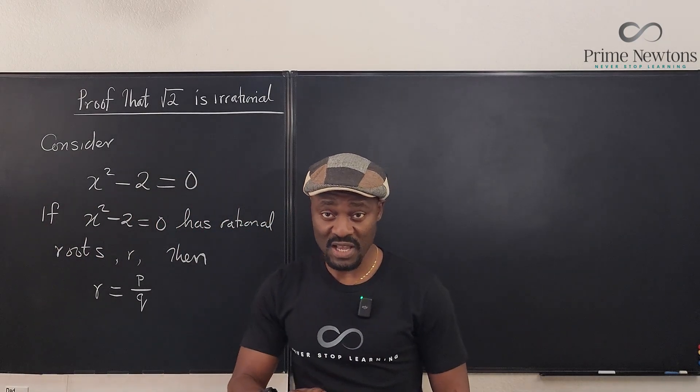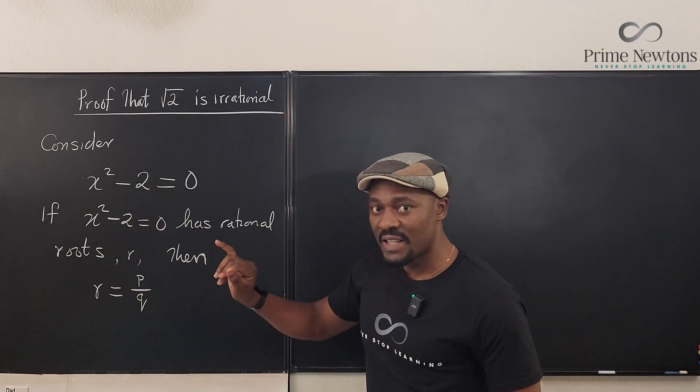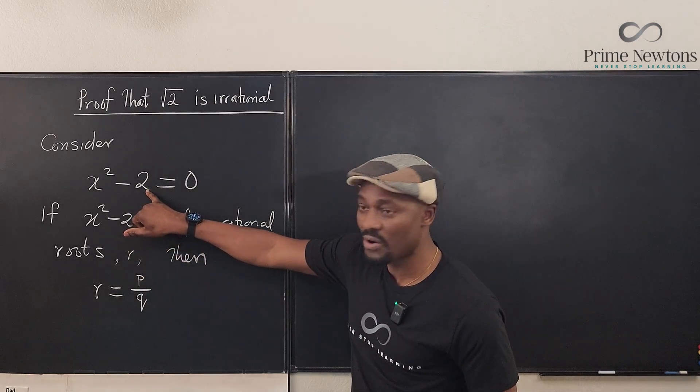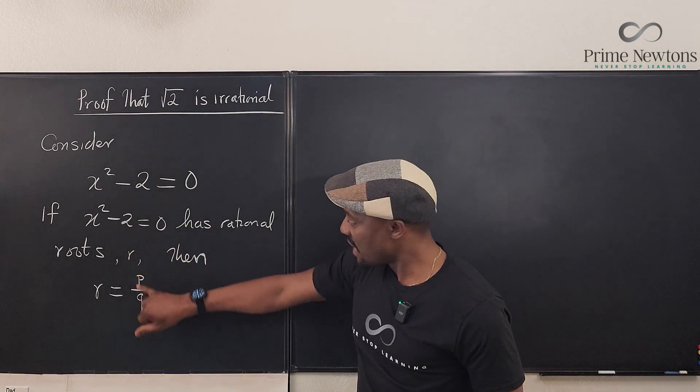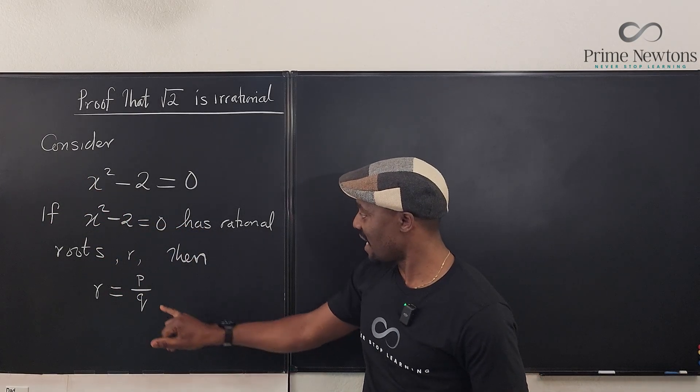The rational roots theorem says that if any polynomial has rational zeros, the zeros will be in this form, p over q, where p is a factor of the constant and q is a factor of the leading coefficient. That's the rule.